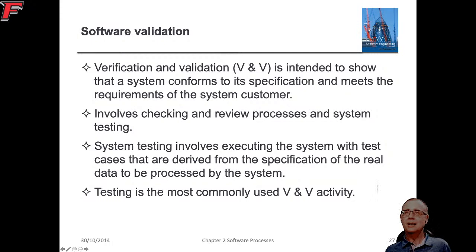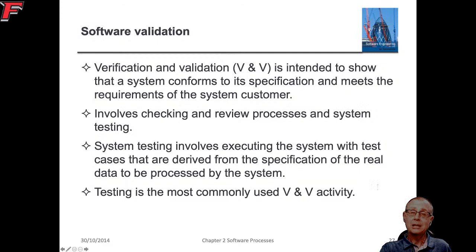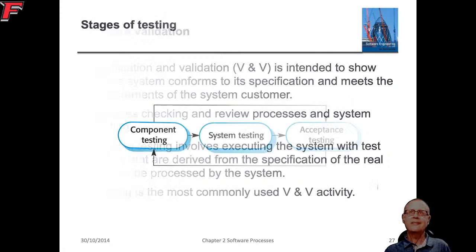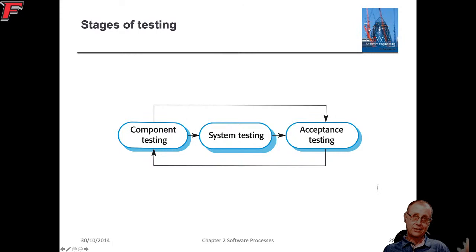Verification and validation happen towards the end of a sprint in agile, or towards the end of development in a plan-based approach. Verification asks: does the system meet the requirements written down? Validation asks: is the customer happy with what we've produced? We can test components and the system fairly easily, but acceptance testing can be harder because we need to involve the customer.